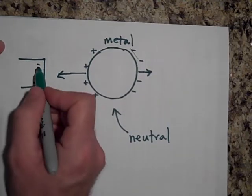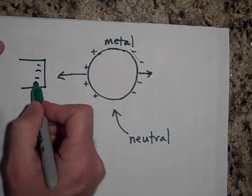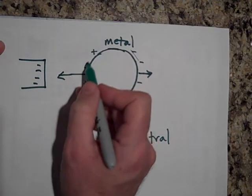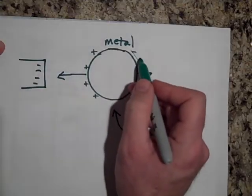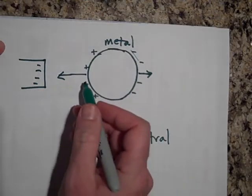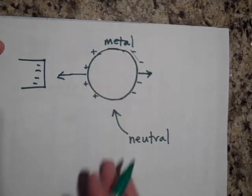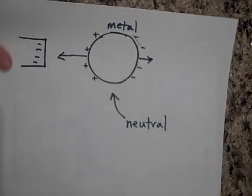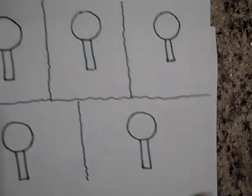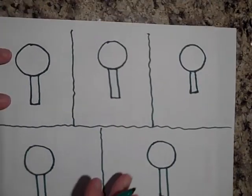If this were positive, then the electrons would have come over here, leaving this side positive, and this would have been, again, an attractive force. Okay, I want to show you how to charge by induction.